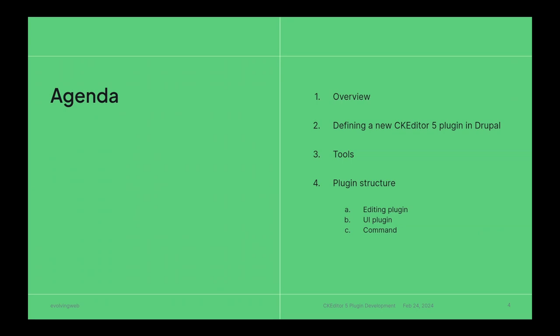We're going to be talking about CKEditor 5 plugin development. I'll give some context on how I got into this. I assume most of us are Drupal developers, so we'll start from a familiar part — from Drupal — how we connect the plugin to Drupal. We'll discuss the tools we use for development, and we'll build that into the plugin structure: namely the editing plugin, UI plugin, and the command.